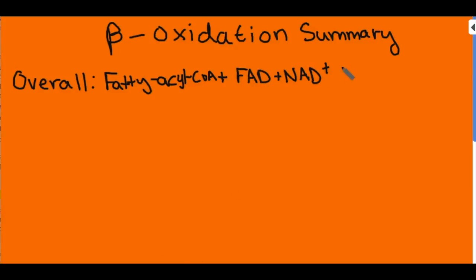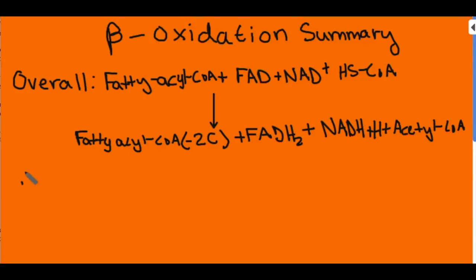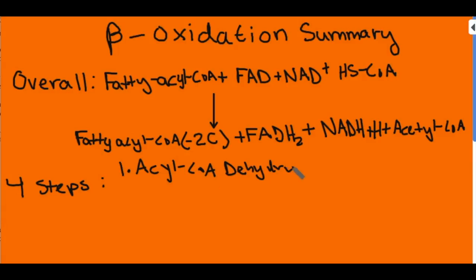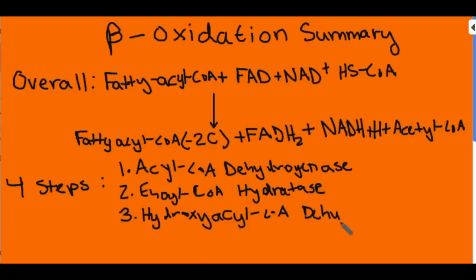Now for beta oxidation. Overall, the reaction takes fatty acyl-CoA plus FAD and NAD+ plus coenzyme A and gives you fatty acyl-CoA minus two carbons, plus FADH2, NADH, H+, and acetyl-CoA. The four steps use these enzymes: (1) acyl-CoA dehydrogenase, (2) enoyl-CoA hydratase, (3) hydroxyacyl-CoA dehydrogenase, and (4) beta-ketothiolase.